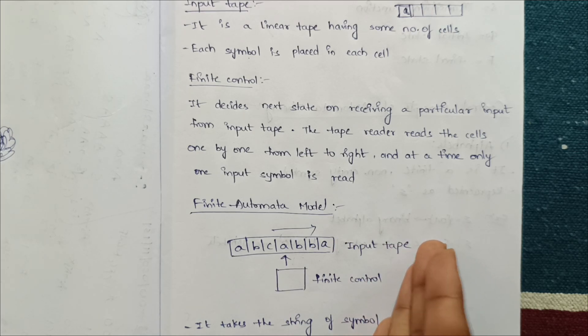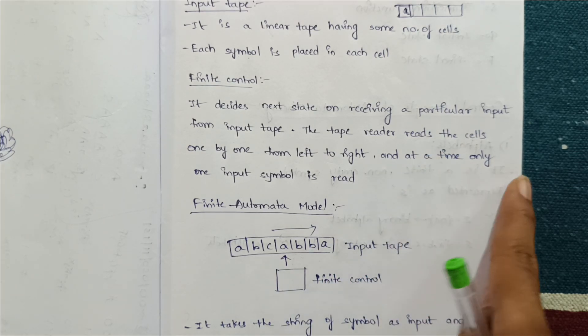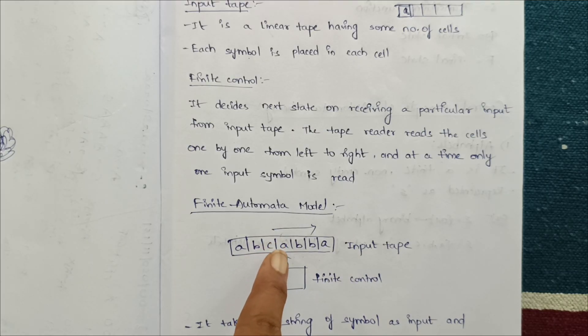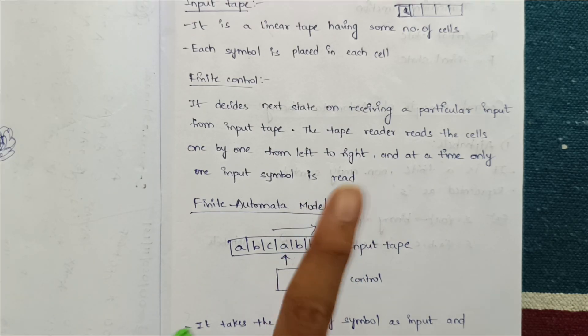At a time only one input symbol is read, and that particular input symbol is read by the finite automata. So it reads only one input symbol. For example, A, B - it reads only one input symbol.